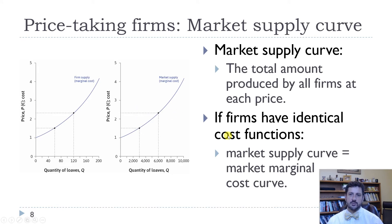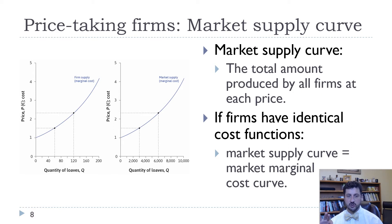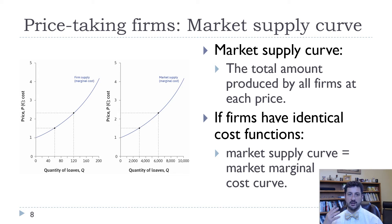Thinking about the supply curve, one way to think about it is that it's simply marginal cost. The firm's supply curve is marginal cost, and we're assuming here that the marginal cost curve is upward sloping. The marginal cost curve could be downward sloping for a little while while firms enjoy economies of scale, but then eventually we would expect it to be upward sloping again. So if all the firms are the same and have identical cost functions, the market supply curve will just be the market marginal cost curve.